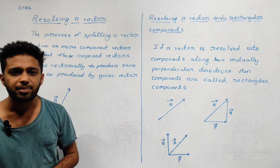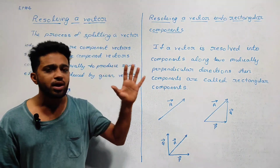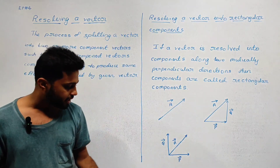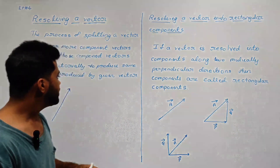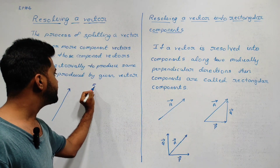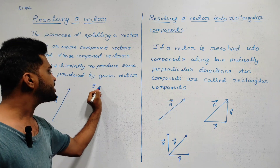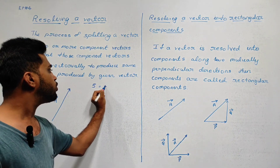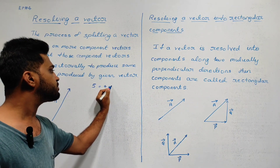For example, to divide the number five: the numbers are four and one. The number five is equal to four plus one.